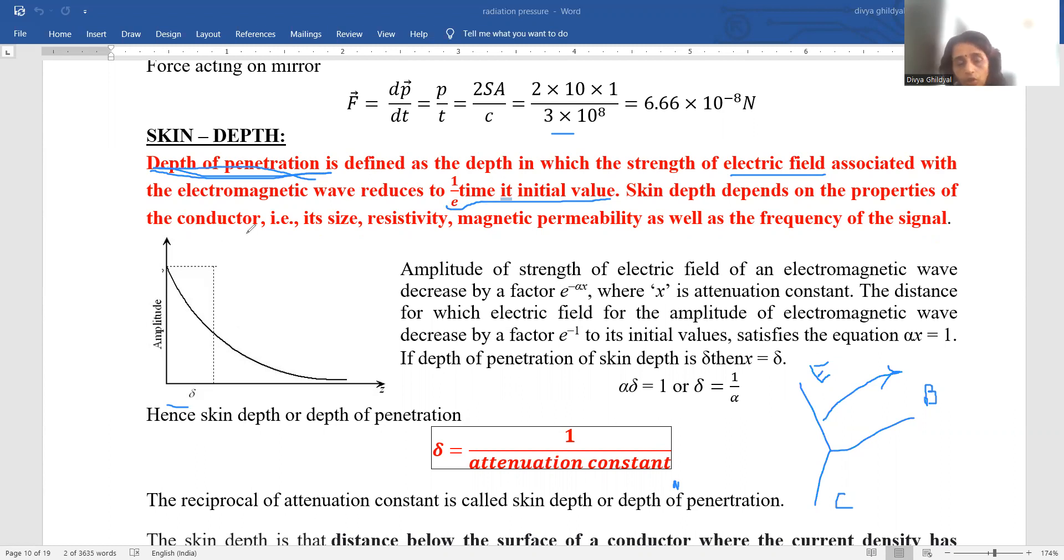Skin depth depends on the properties of the conductor that is or a dielectric or any other material on its size, resistivity, magnetic permeability as well as the frequency with which that signal is undergoing. Now have a look at this diagram. This is like the exponential growth and decay diagram like radioactivity. Very similar. You see exponential factor.